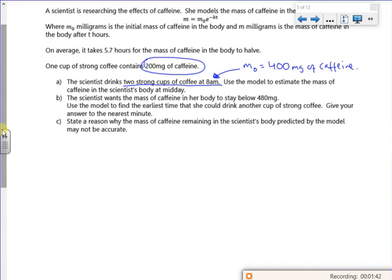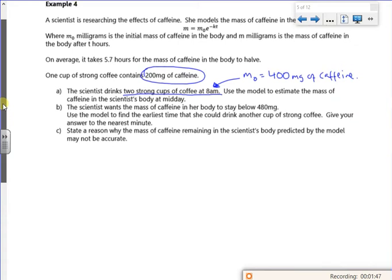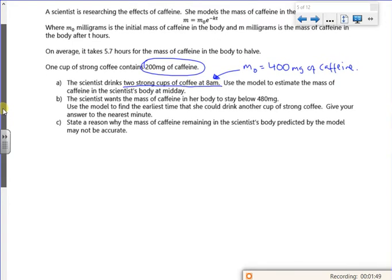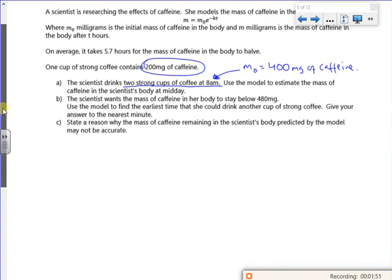Right, so let's have a look at this. Use the model to estimate how much is in it at midday. So what do we need to do? We need to use this information because at the moment I've got M equals 400 E to the minus kt. So I'm going to use this information.